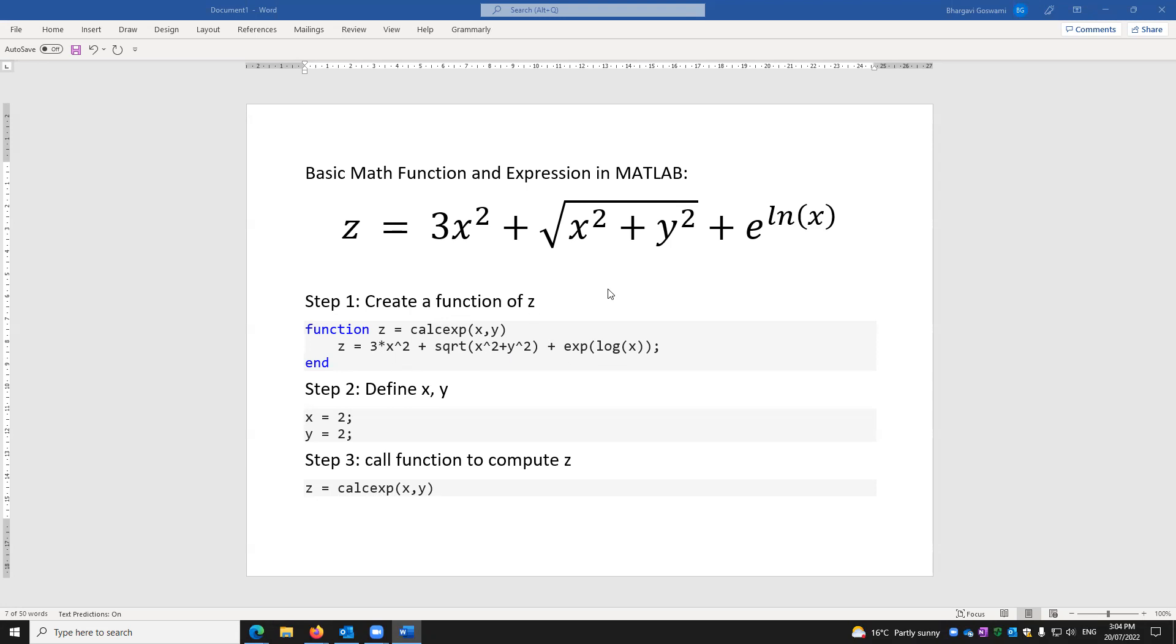So multiplication, this is how we write it. 3 multiplied by x squared plus square root of x squared plus y squared plus exponential log of x.